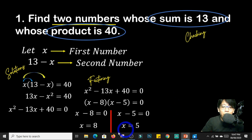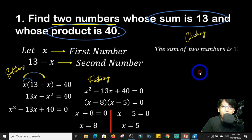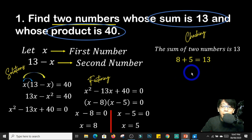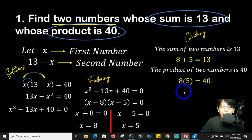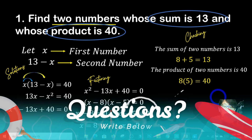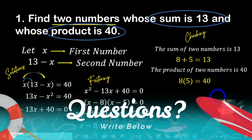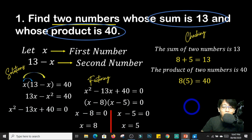Let us check if the values are correct. According to the problem, the sum of the two numbers is 13. If you add 8 and 5, that is 13. The product of the two numbers is 40. If you multiply 8 times 5, that is 40. If you have any questions, you can always write them in the comment section — I will be happy to answer them.